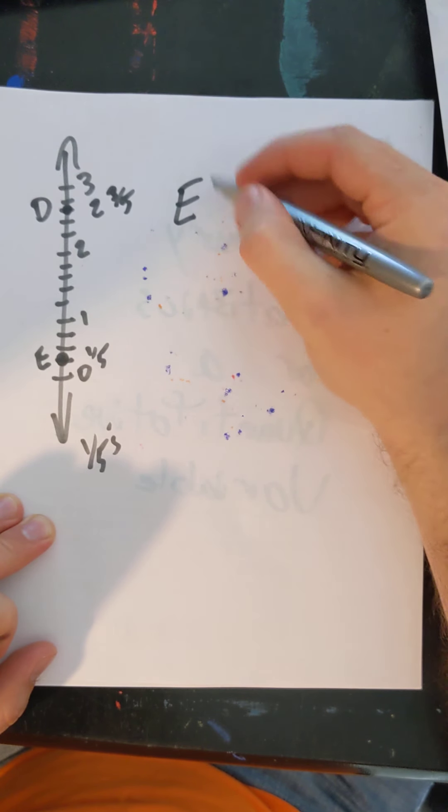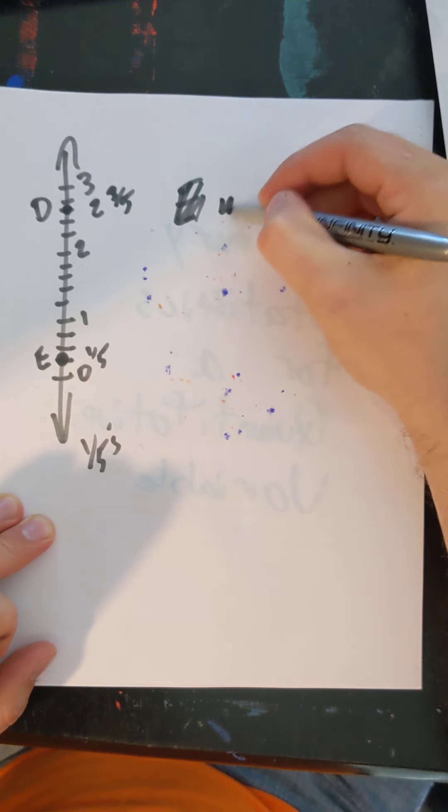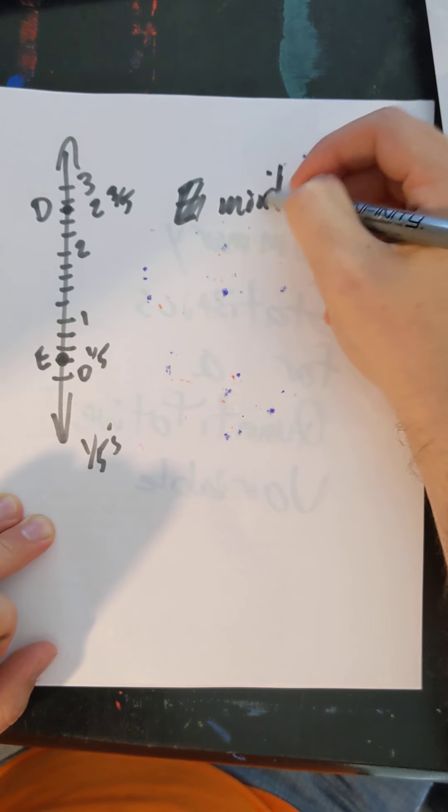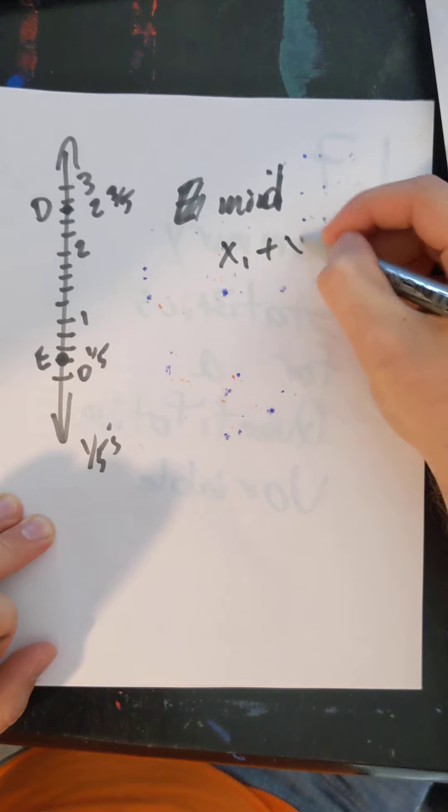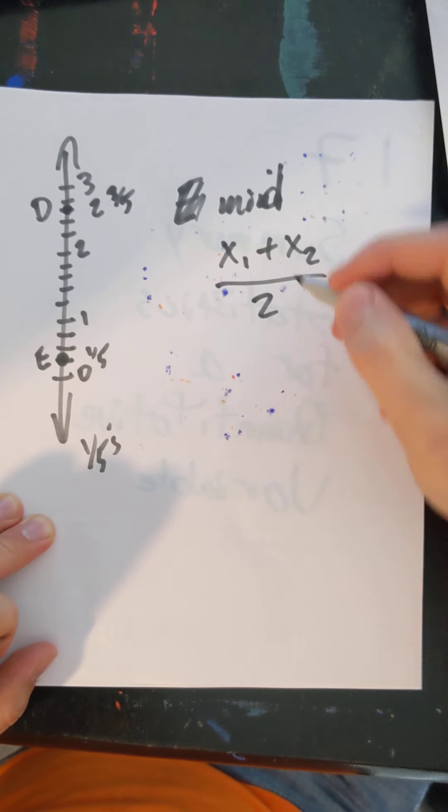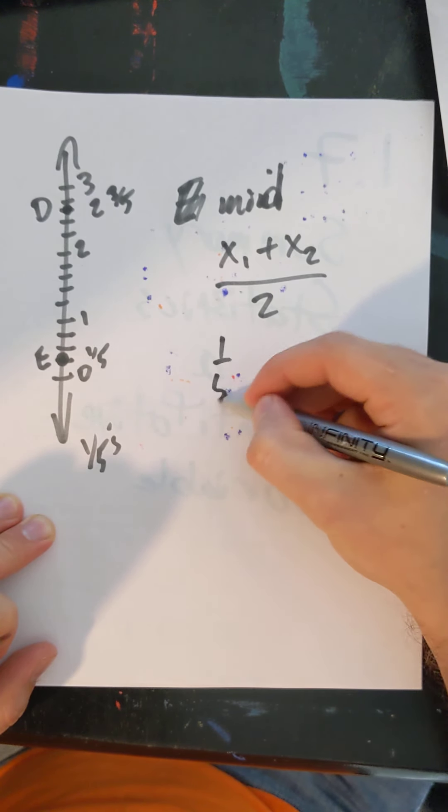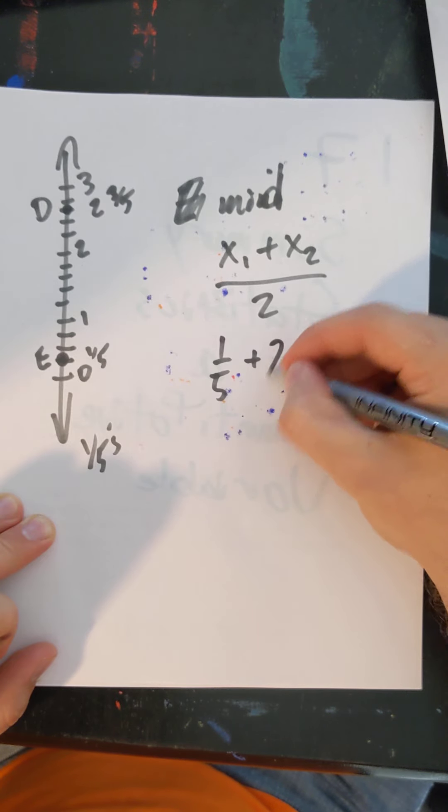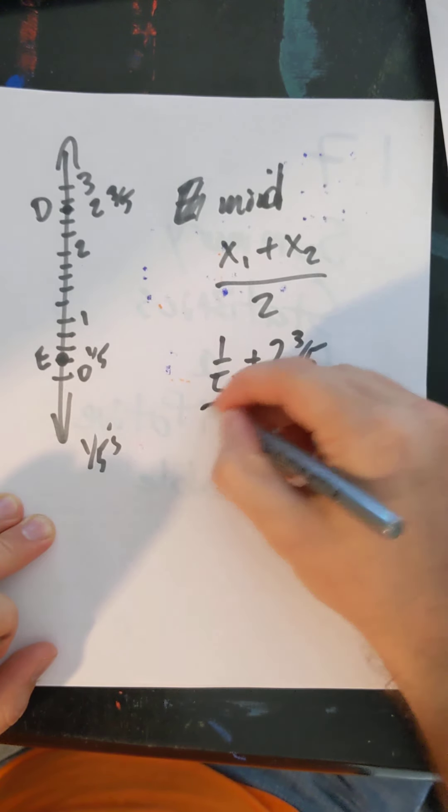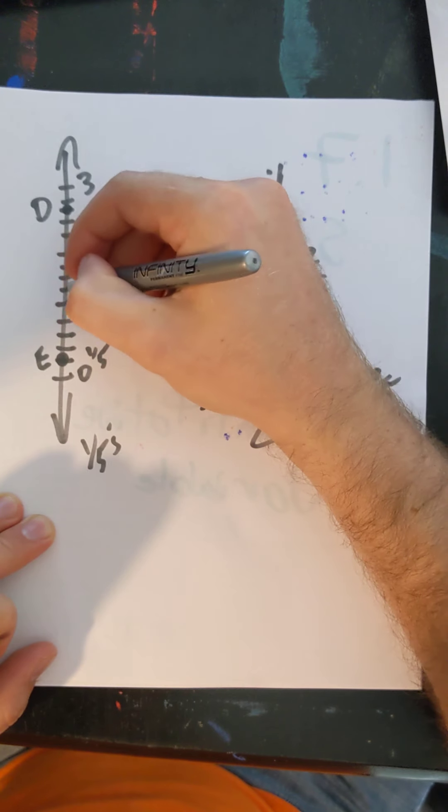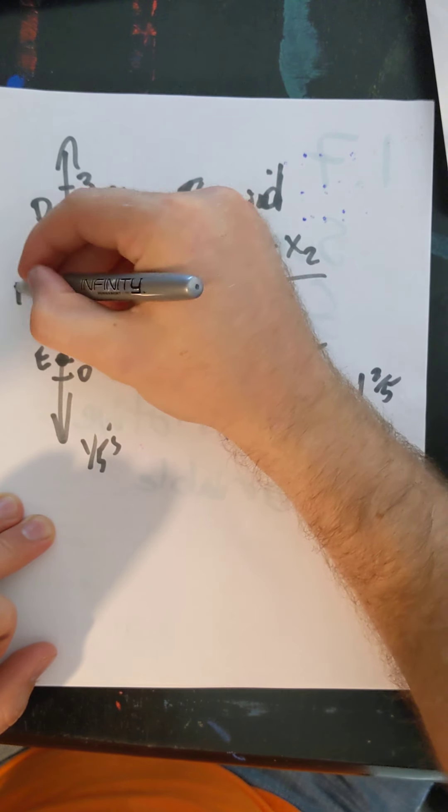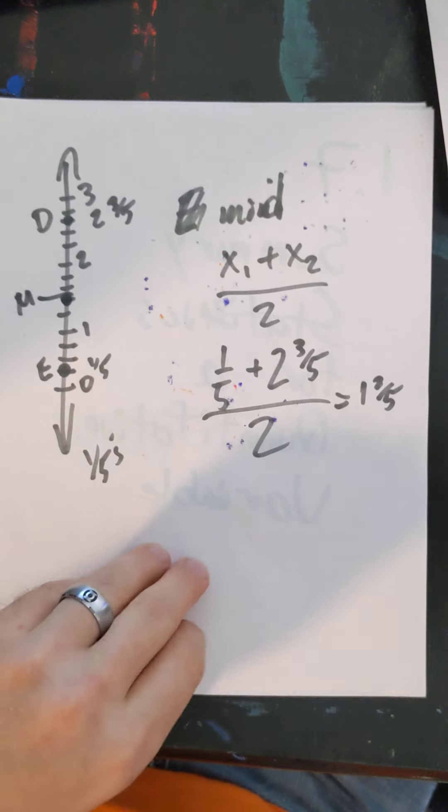Okay, so if I'm going to use my endpoint formula, sorry, my midpoint formula, not mind point, midpoint, then I need to take my two values, add them and divide by two. So I have one fifth plus two and three fifths divided by two. Well, that's going to give me two and four fifths divided by two is one and two fifths. So I'll go up to one, up to two fifths. There's my fancy midpoint. All right.